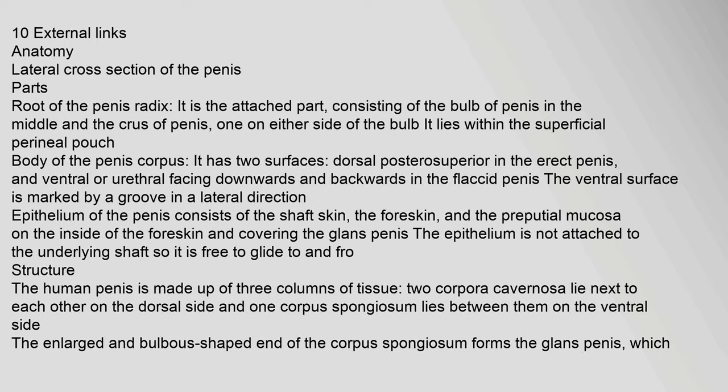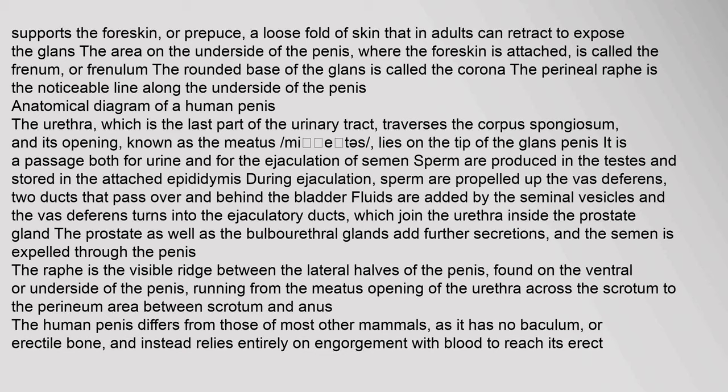The human penis is made up of three columns of tissue: two corpora cavernosa lie next to each other on the dorsal side and one corpus spongiosum lies between them on the ventral side. The enlarged and bulbous-shaped end of the corpus spongiosum forms the glans penis, which supports the foreskin or prepuce — a loose fold of skin that in adults can retract to expose the glans. The area on the underside of the penis where the foreskin is attached is called the frenum or frenulum.